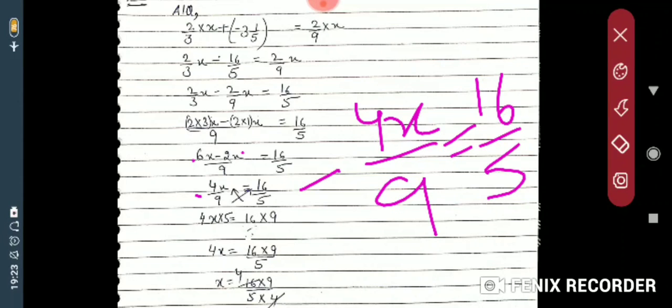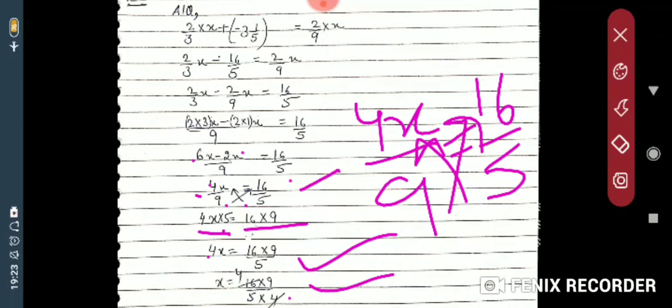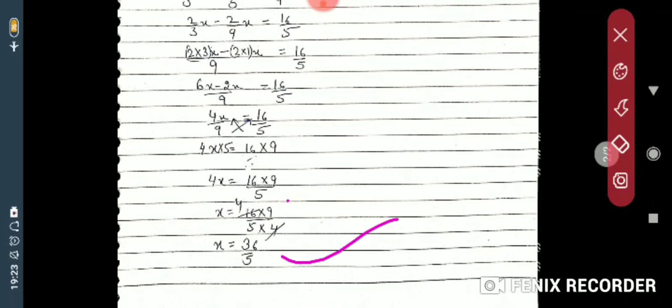By cross multiplication: 4x multiplied by 5 equals 16 multiplied by 9, giving 20x = 144, so x = 144/20 = 36/5. The rational number is 36/5. The remaining sums you have to solve by yourself. Thank you.